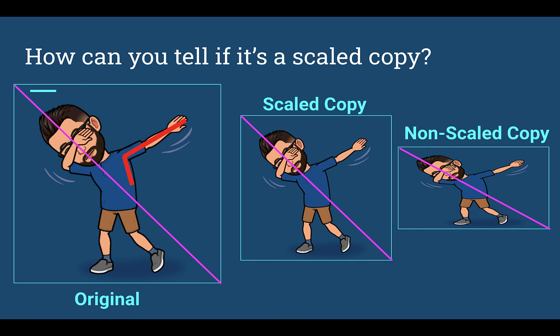Let's look at some other things. So, in the original, we have these red lines that kind of show the angle of the arm. If I look at the scale copy, it is the exact same angle.